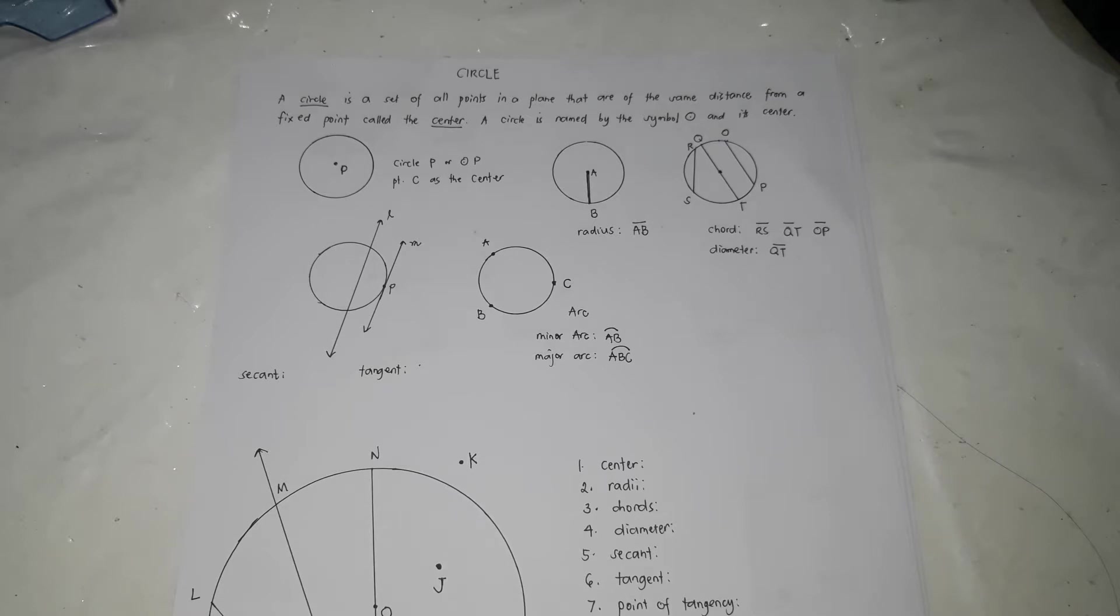It is not a polygon because it is not composed of line segments. So first, what is the definition of a circle? A circle is a set of all points in a plane that are of the same distance from a fixed point called center.